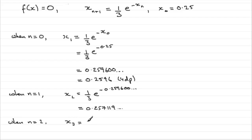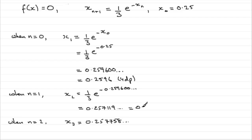Setting n = 2, x3 = (1/3)e^(-0.257119...), which gives 0.257758... on the calculator. To four decimal places, x2 = 0.2571 and x3 = 0.2578.